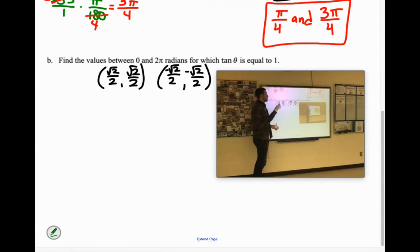As long as they're both the same symbol, sigma, this is both positive root 2 over 2. These would be both negative root 2 over 2.